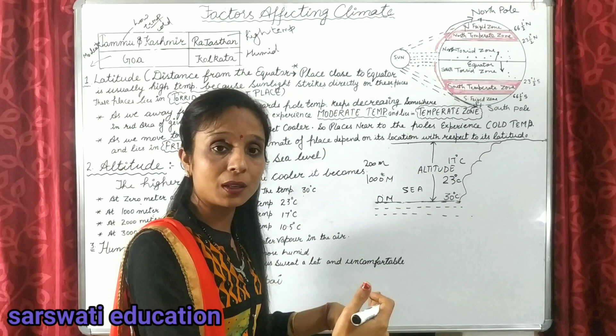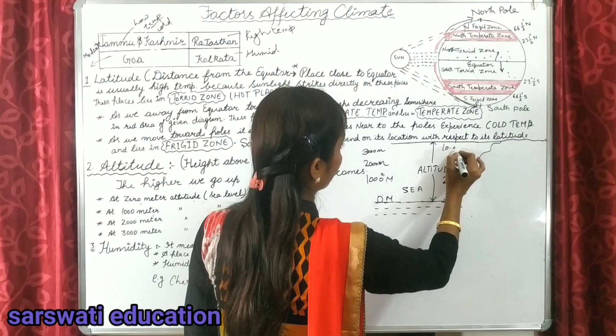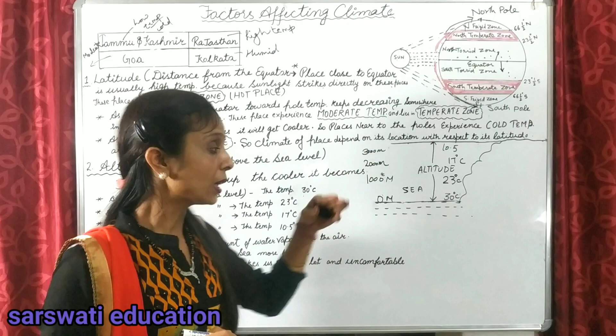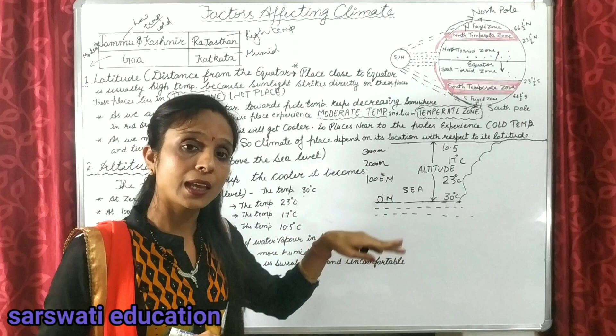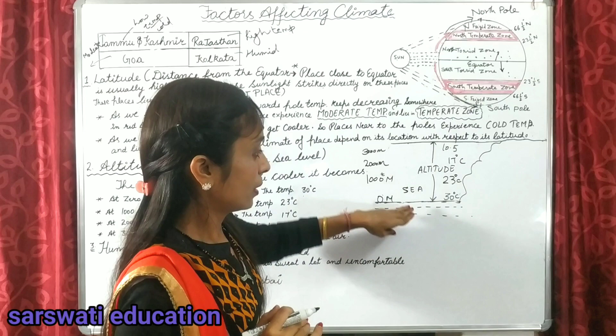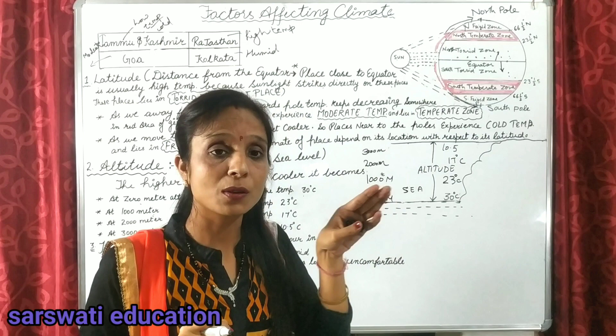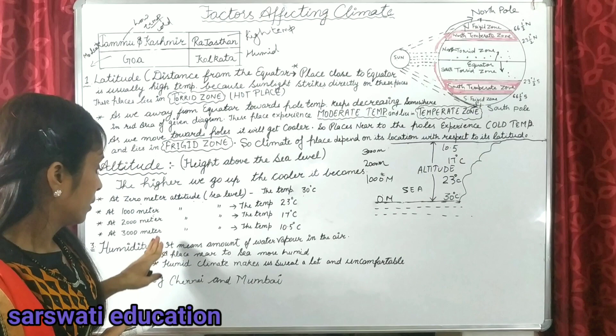At two thousand meters it becomes 17 degrees Celsius, and at three thousand meters it becomes 10.5 degrees. As we go higher up, the temperature keeps decreasing and the area becomes cooler. That is why hill stations have low temperature and a cooler climate.